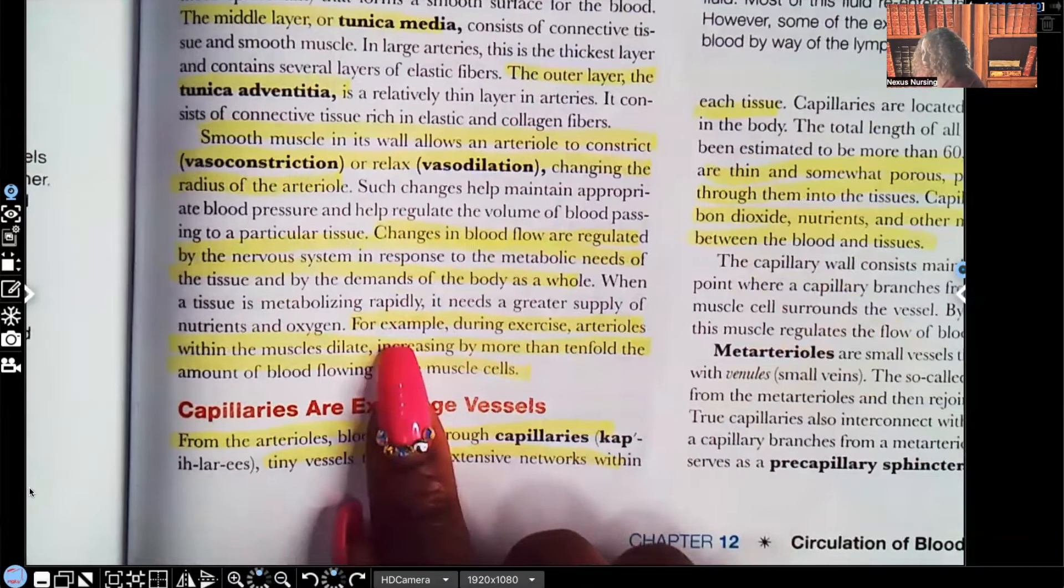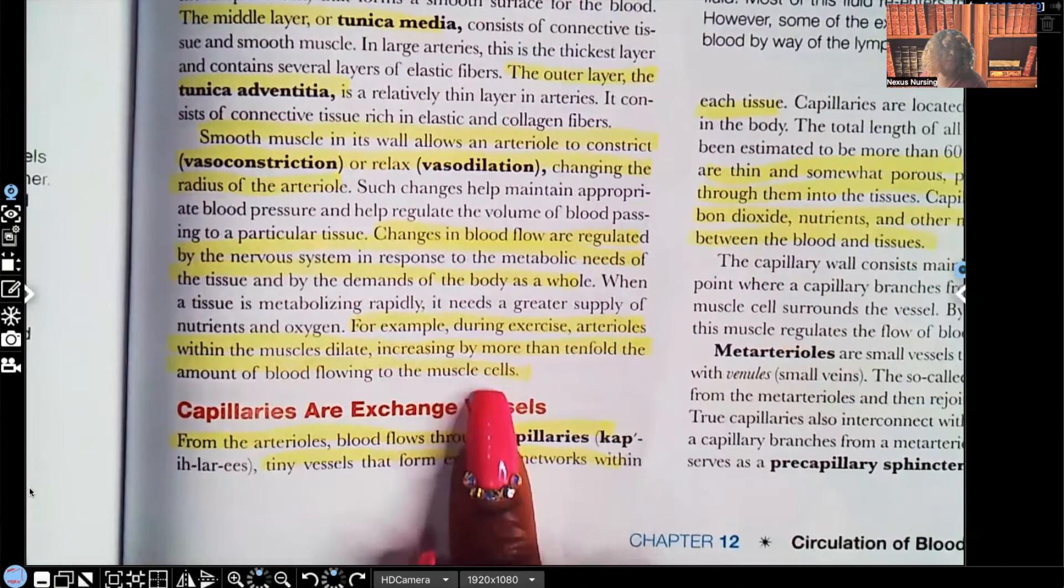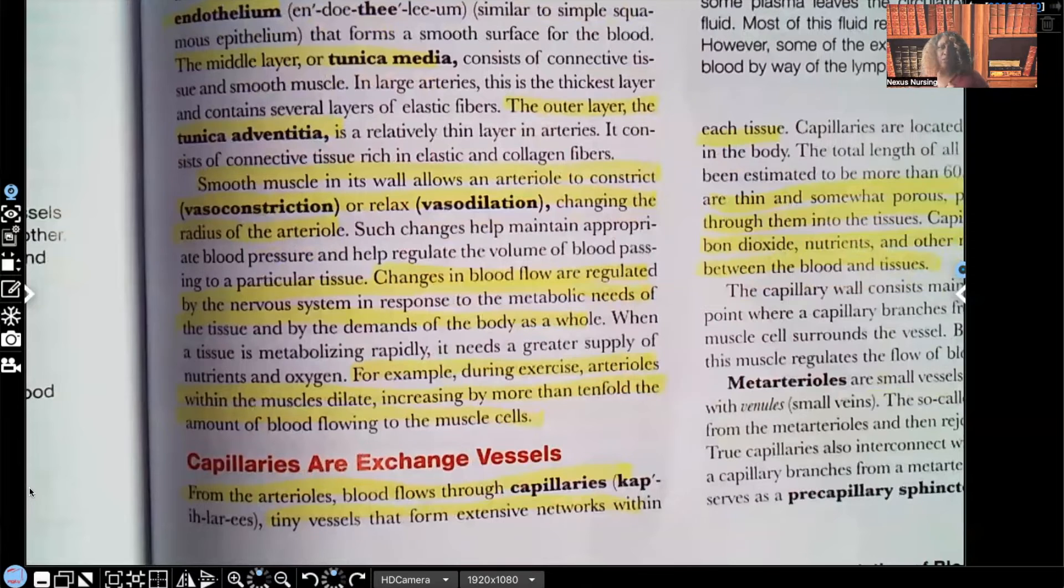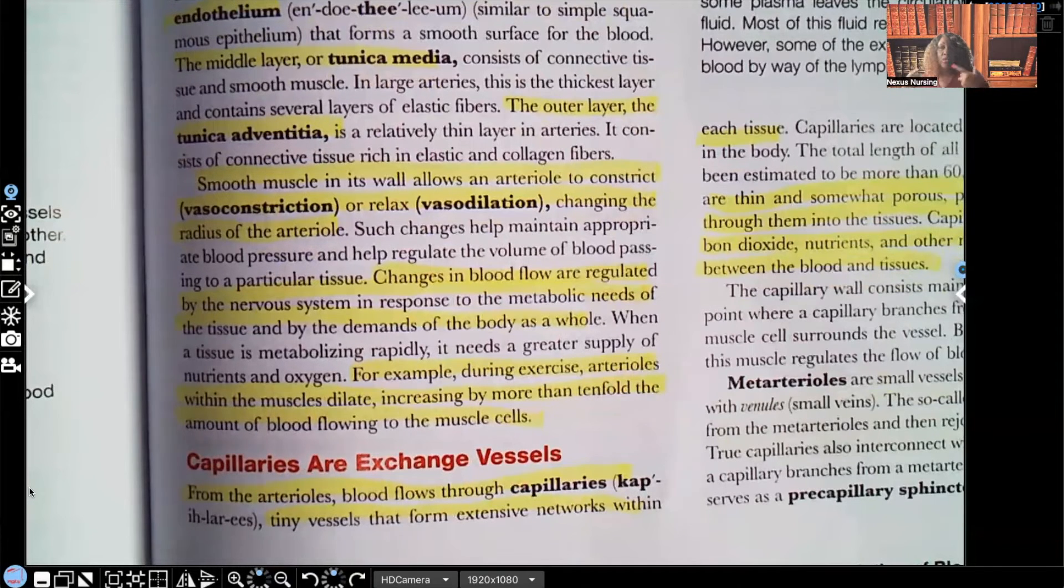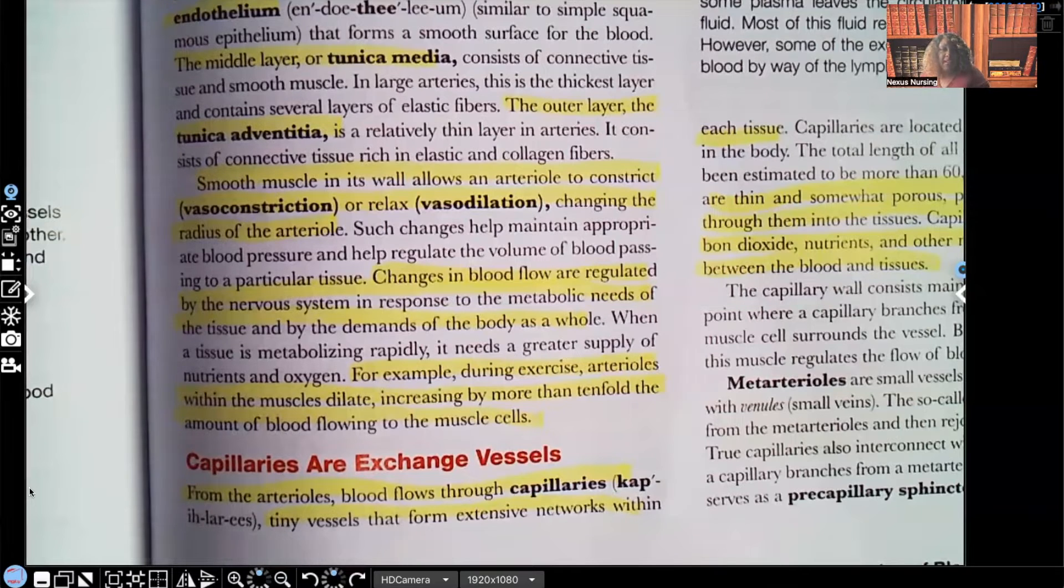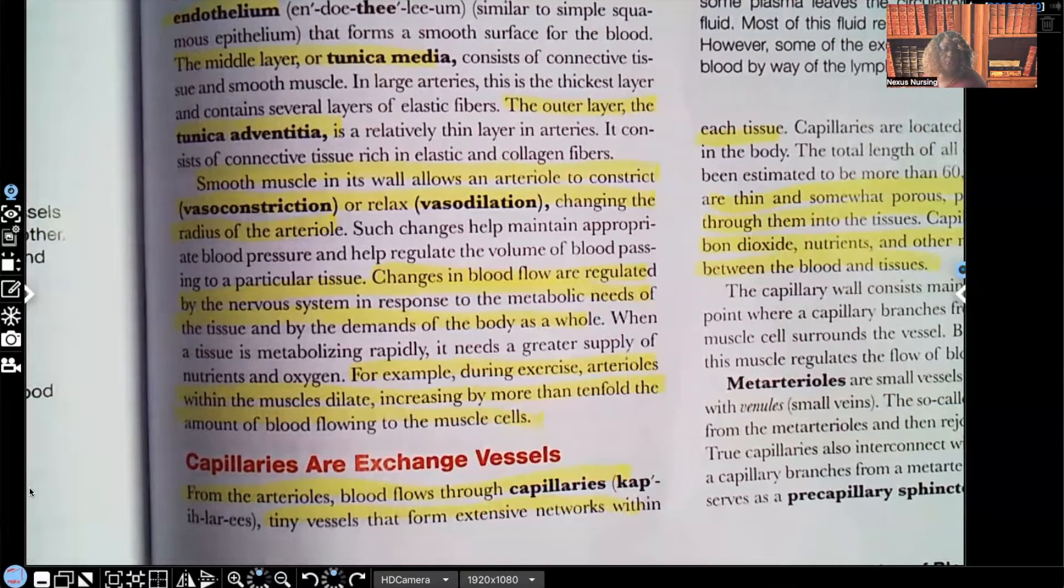Changes in blood flow are regulated by the nervous system in response to metabolic needs of the tissue and by demands of the body as a whole. For example, during exercise, arterioles within the muscles dilate, increasing by more than tenfold the amount of blood flowing to the muscles. I want you to think about this, guys. Imagine a person who's exercising. They're running. Any activity, anything that you do that increases the metabolic rate, it's going to increase the oxygen demand. If you're exercising, you're running, you need more oxygen. Your tissues need more oxygen because you're doing more. Where's the oxygen being carried? In the blood. So, guys, it makes sense that as that metabolic demand of the body increases, that we're going to see vasodilation. Why? We need more blood flow that's carrying the oxygen, that's carrying the vitamins, that's carrying the nutrients and minerals to get to the tissues. So, it makes sense.